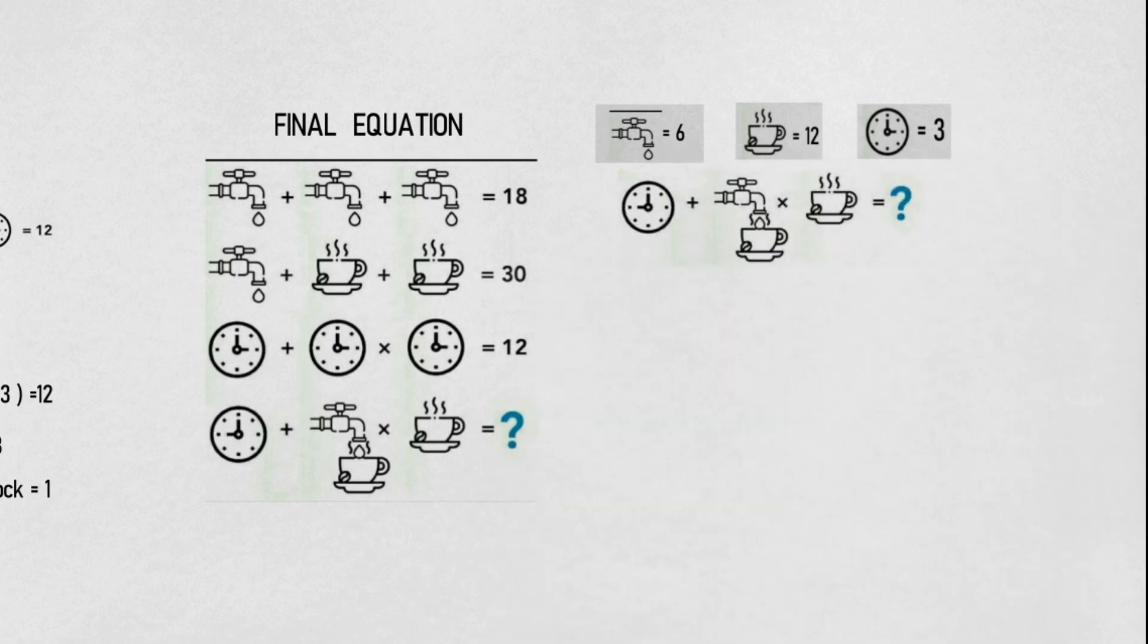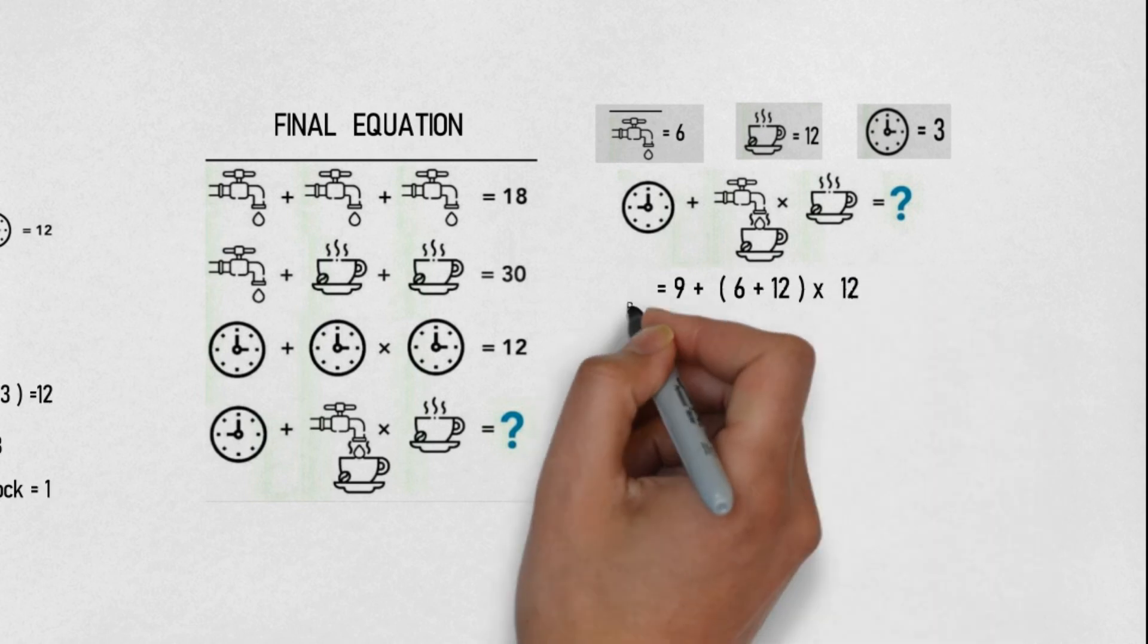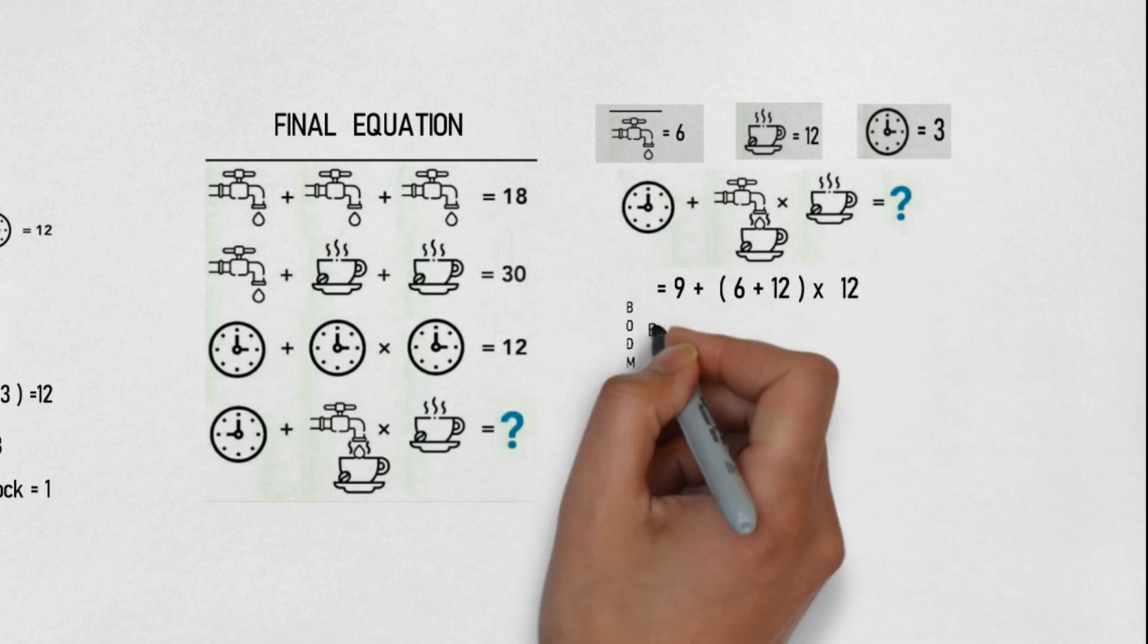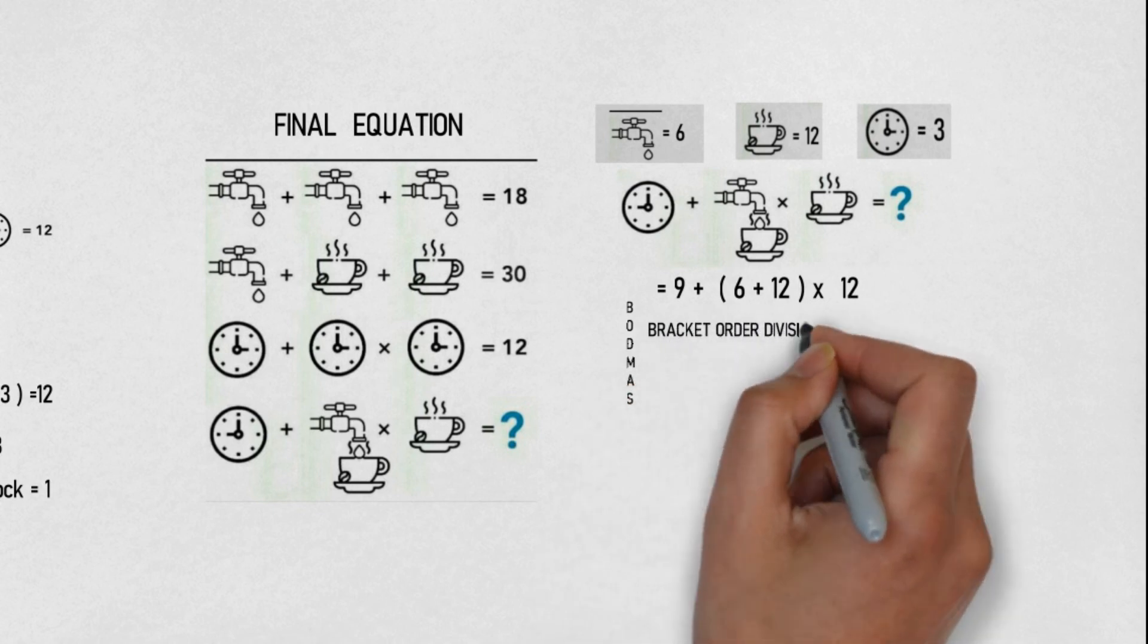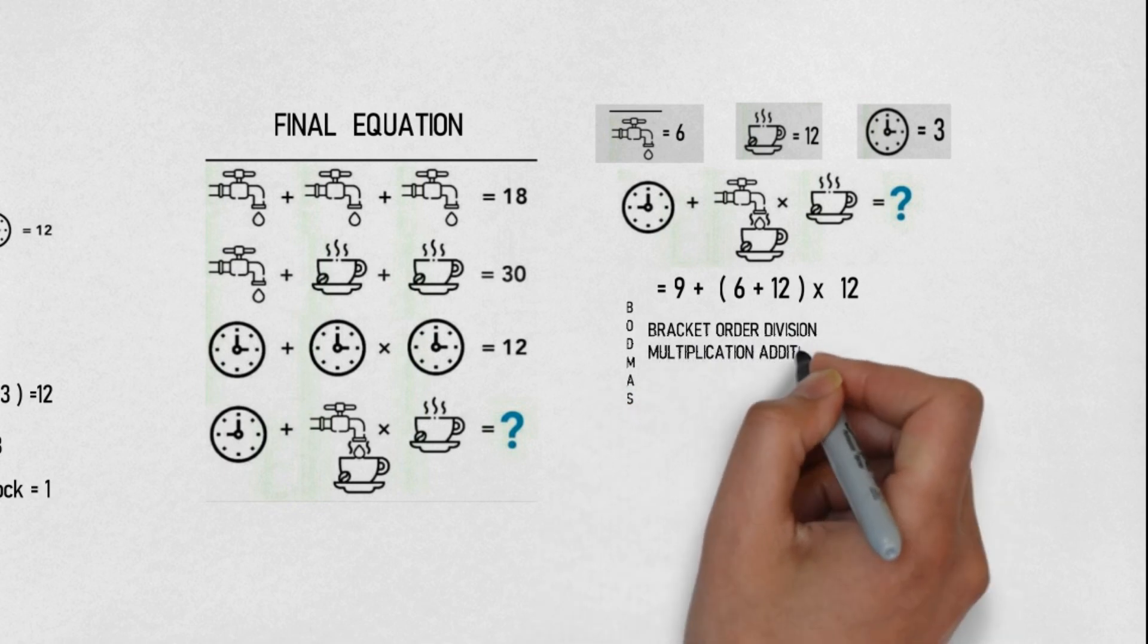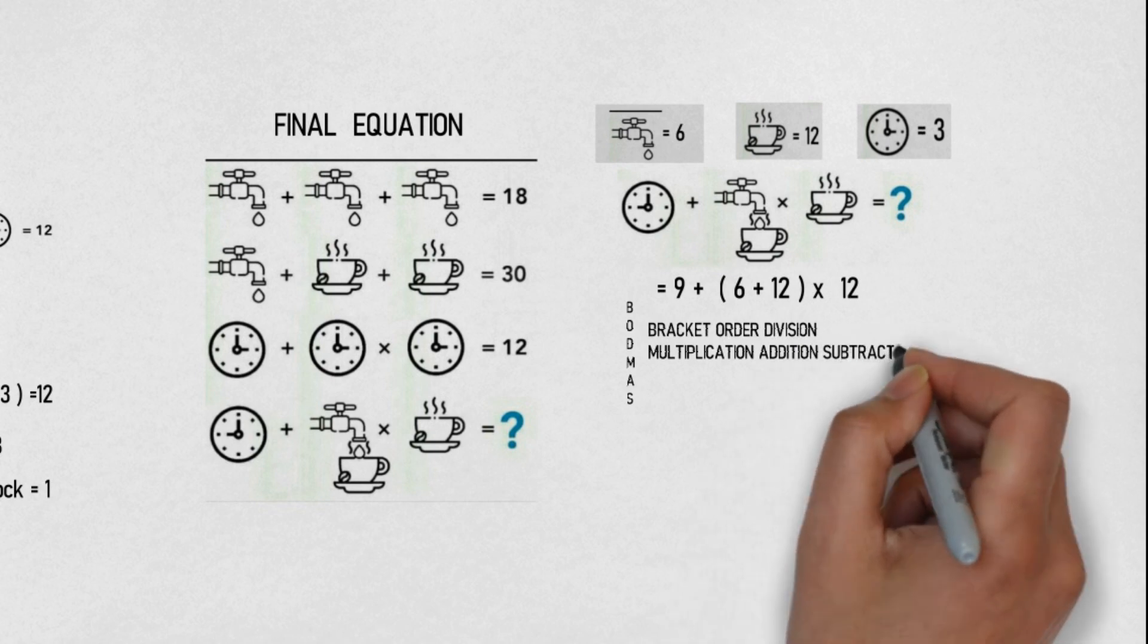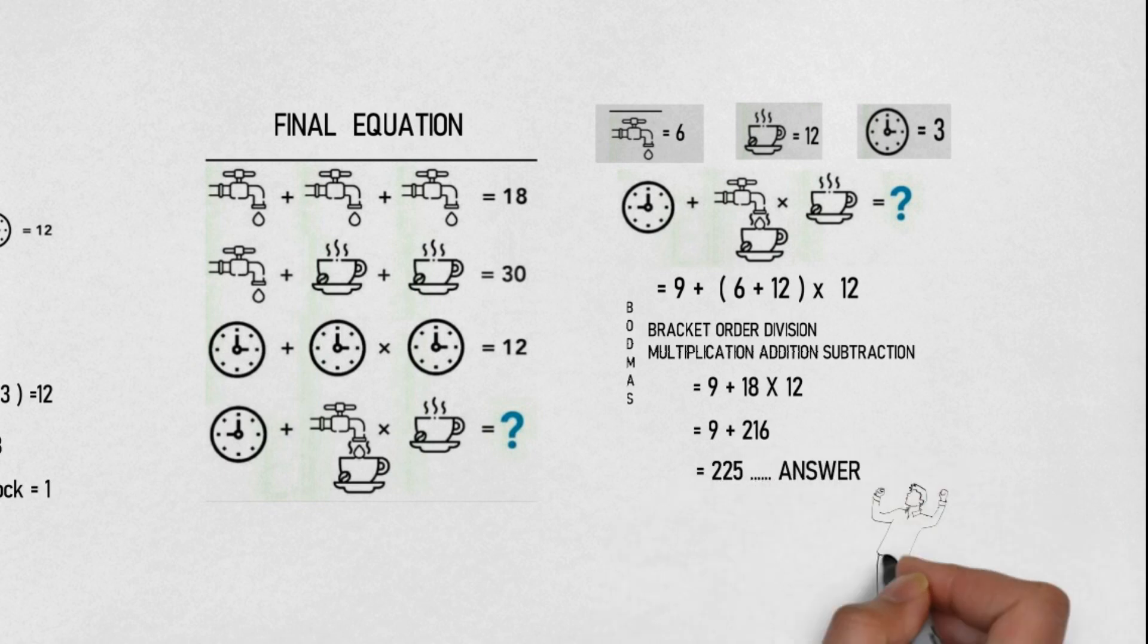Now friends, if we look carefully, in this the clock value is 9. So 9 plus 18 times 12, that will be equal to 9 plus 216, is equal to 225. Answer! We have solved this puzzle.